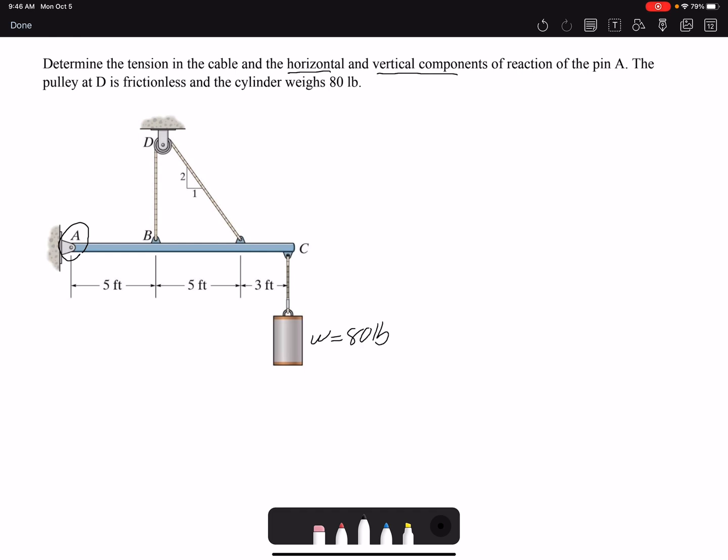The pulley is frictionless, that means that the tension developed in the rope is the same because we are dealing with the same rope. Similar to any other equilibrium problem...